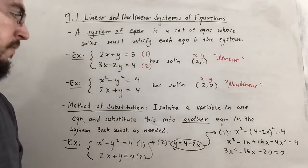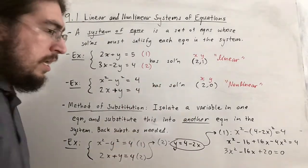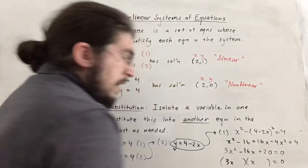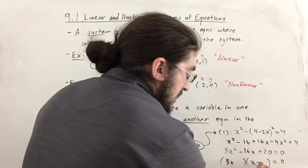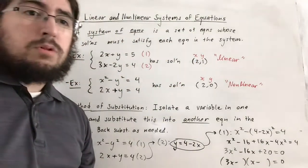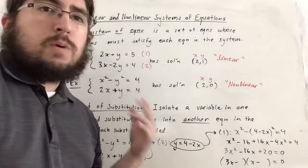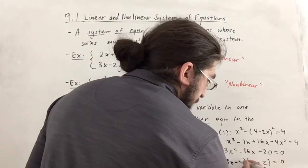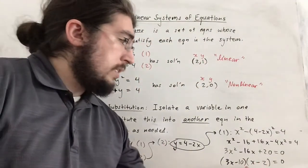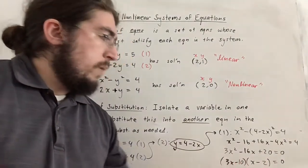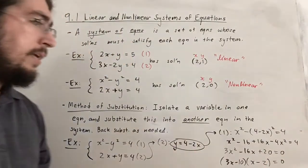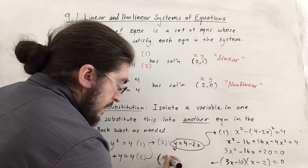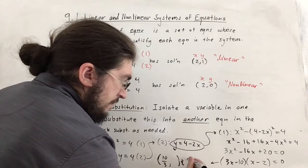We already know x = 2 is a solution. To factor 3x² − 16x + 20, it factors as (3x − 10)(x − 2). Both signs are negative to multiply to positive 20 and add to negative 16. Checking: the inner term gives −10x, outer gives −6x, combining to −16x — that works. So we get x = 10/3 and x = 2.